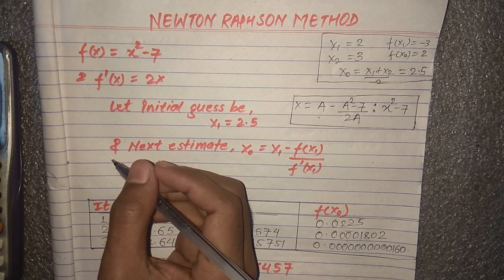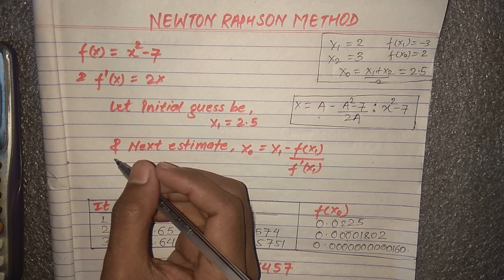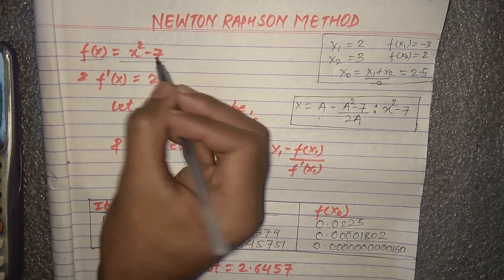Hello guys and welcome to my channel. Today in this lecture I am going to teach you how to find a root using Newton's Raphson method. Here we have the given function f(x) = x² - 7 and f'(x) = 2x.